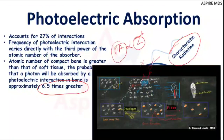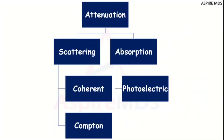If you remember the video on latent image formation, we discussed how absorption of x-rays passing through the object helps in the formation of the image as either radiopaque or radiolucent. So we have now discussed beam attenuation in the form of coherent scattering, Compton scattering, as well as photoelectric absorption.